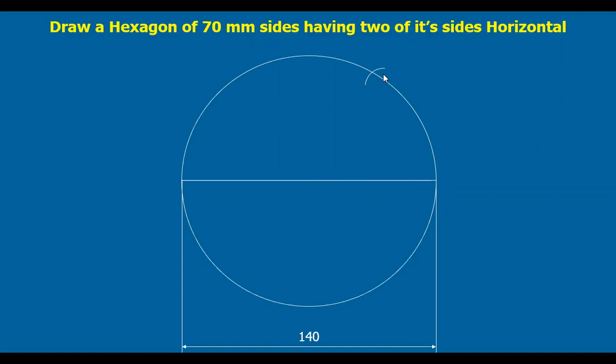So with 70mm radius, I draw an arc from here, another arc from here, another arc, another, another like this. We get six points here on the circle, including this we get six points. Join these points by straight lines, we get a hexagon with the two sides horizontal. Isn't it interesting? It's exciting.